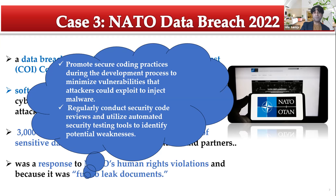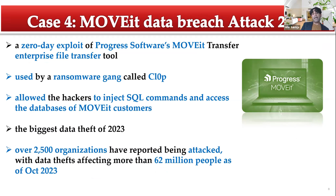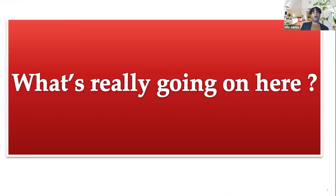The most recent and biggest data theft of 2023 is the MOVEit data breach attack, carried out by ransomware gang Clop. It was a zero-day exploit of Progress Software's MOVEit Transfer, an enterprise file transfer protocol. Hackers used the exploit to inject secret commands and access the databases of MOVEit customers. More than 2,500 organizations were attacked and 62 million people as of October 2023 were affected. We need to identify indicators of compromise that can be exploited by malicious actors.